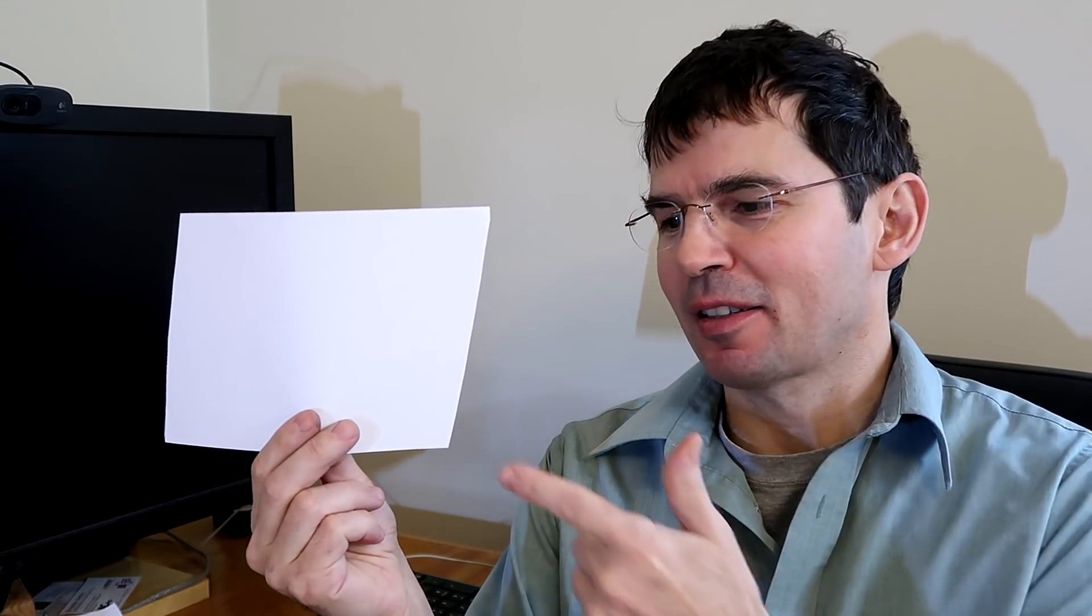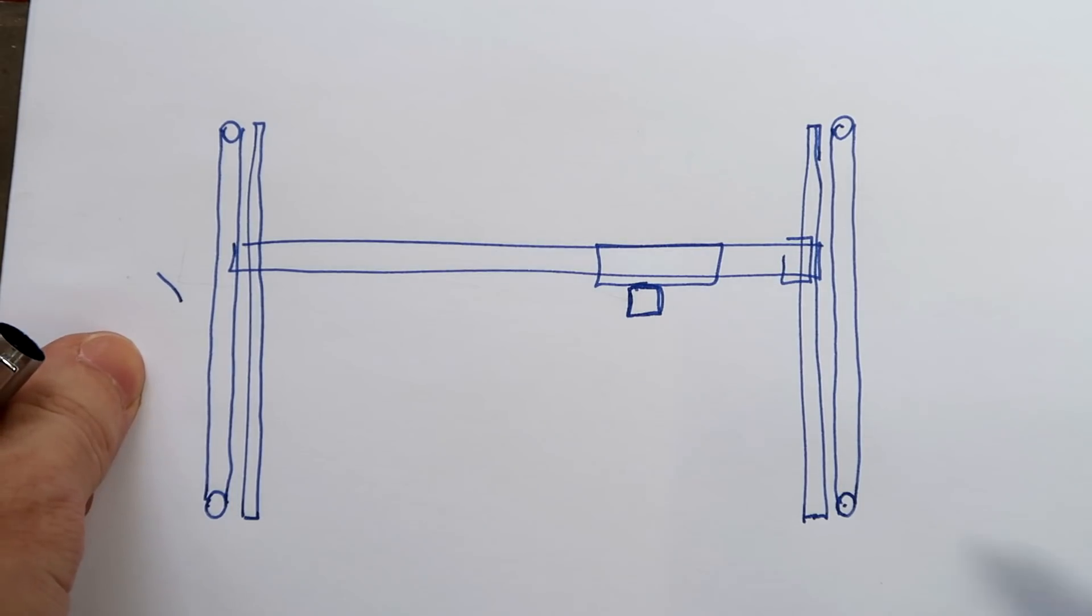And there's one more problem that can happen with the laser cutter, and that's that the gantries are slightly misaligned. This happened on some of the pantorouter templates, where you think you're cutting something like this, but you're actually cutting something like this. Although this is way exaggerated, the problem was so subtle that just looking at it by eye, you couldn't tell there was a problem.